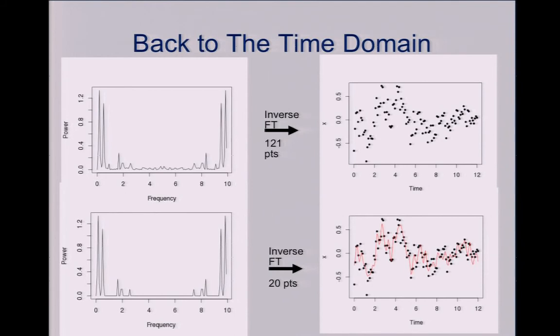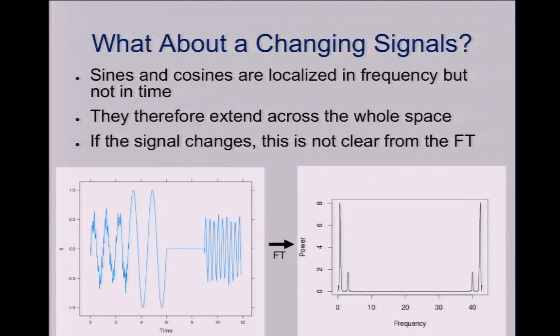But also we can compact it. We can throw out 83% of it and get something which gets a lot of the information with only one-sixth of the data. This seems great, except there's one problem. It assumes that the sines and cosines go off to infinity. They never stop.